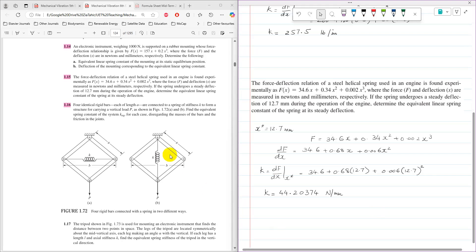Now at the end of the tutorial, the values from the sixth edition are slightly different with a deflection of 12.7. Finding df/dx and then k = df/dx at x*, after taking the derivative and substituting the values of x*, k comes out to 44.20374 Newtons per millimeter. That is the equivalent linear spring constant. Thank you very much for watching.